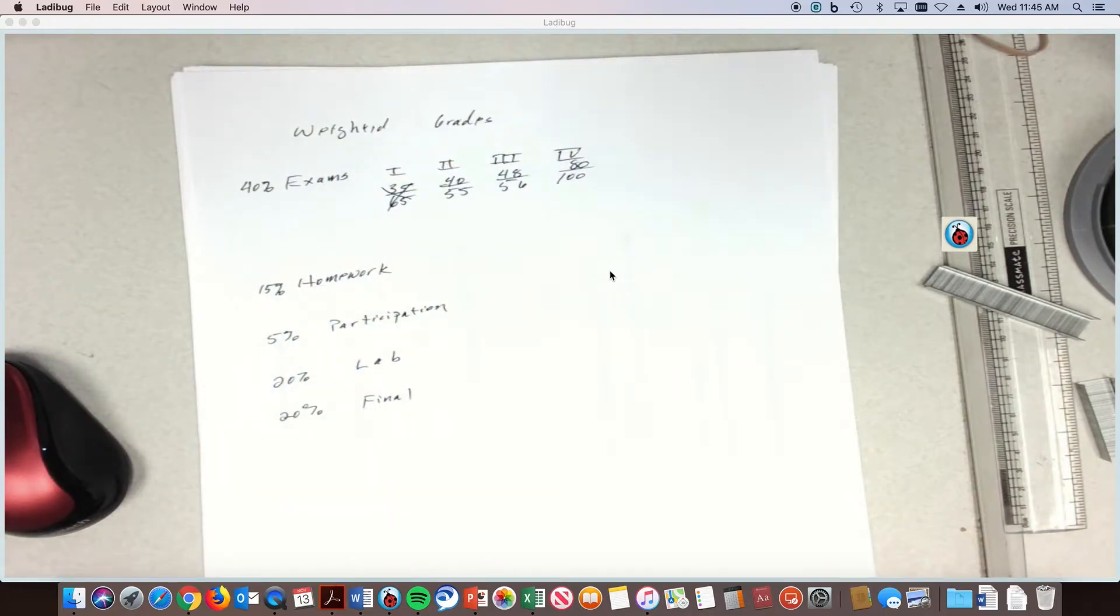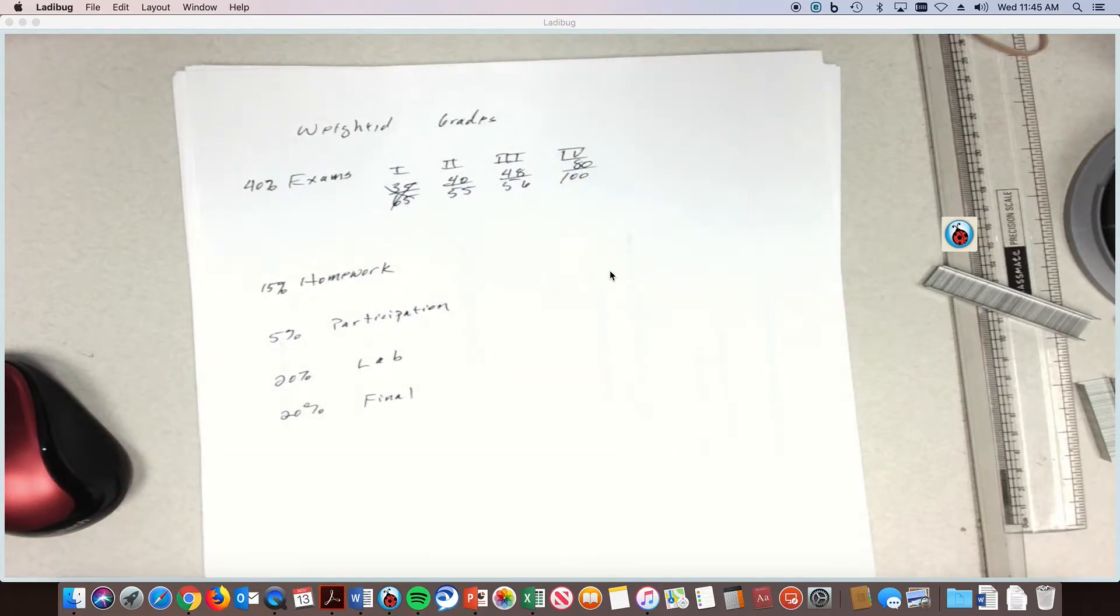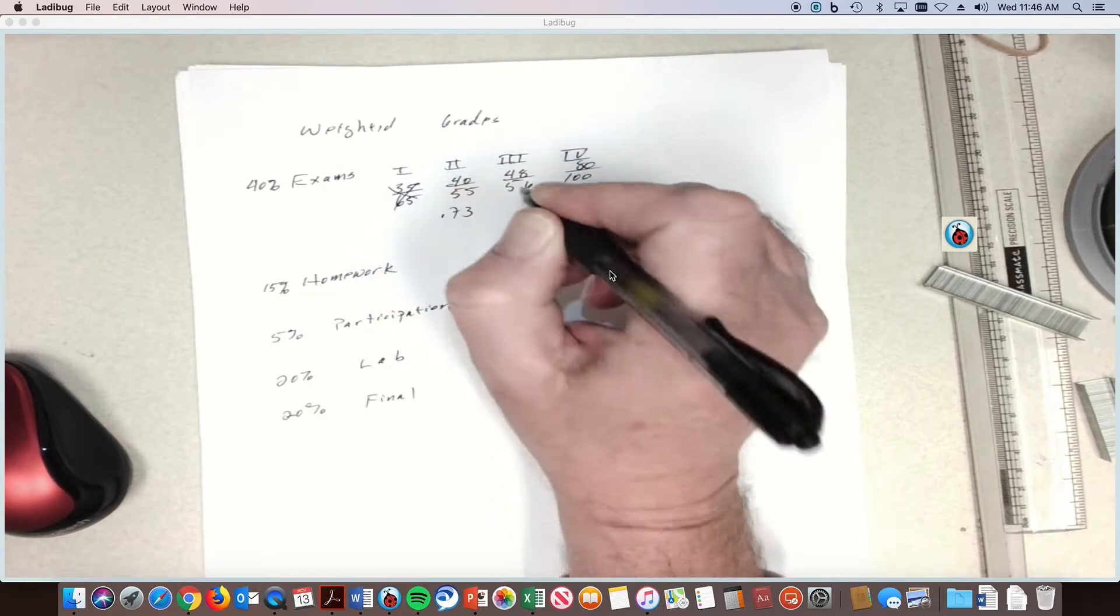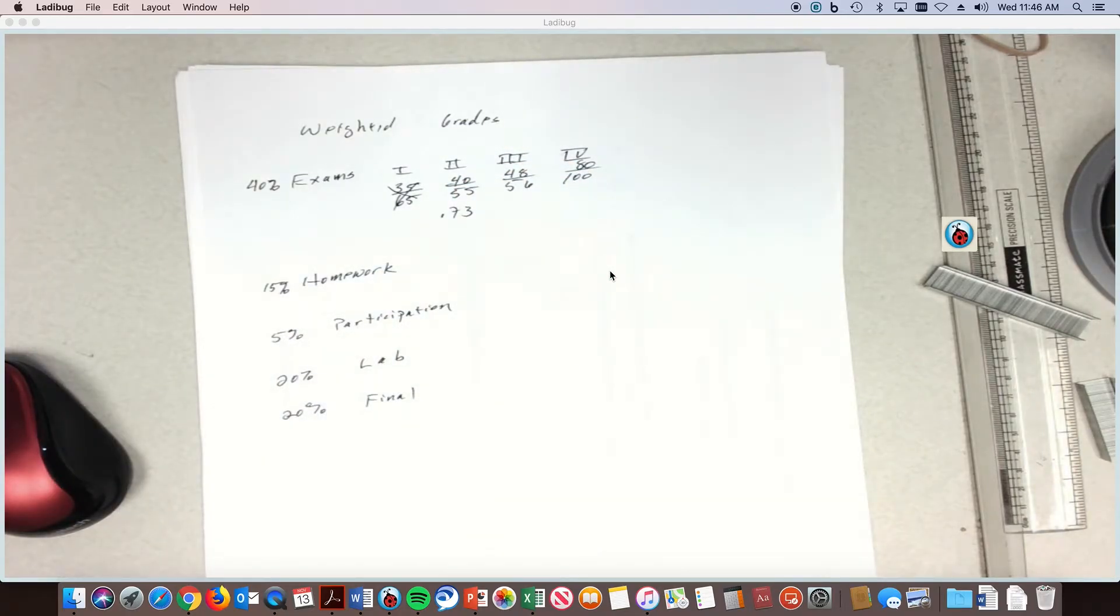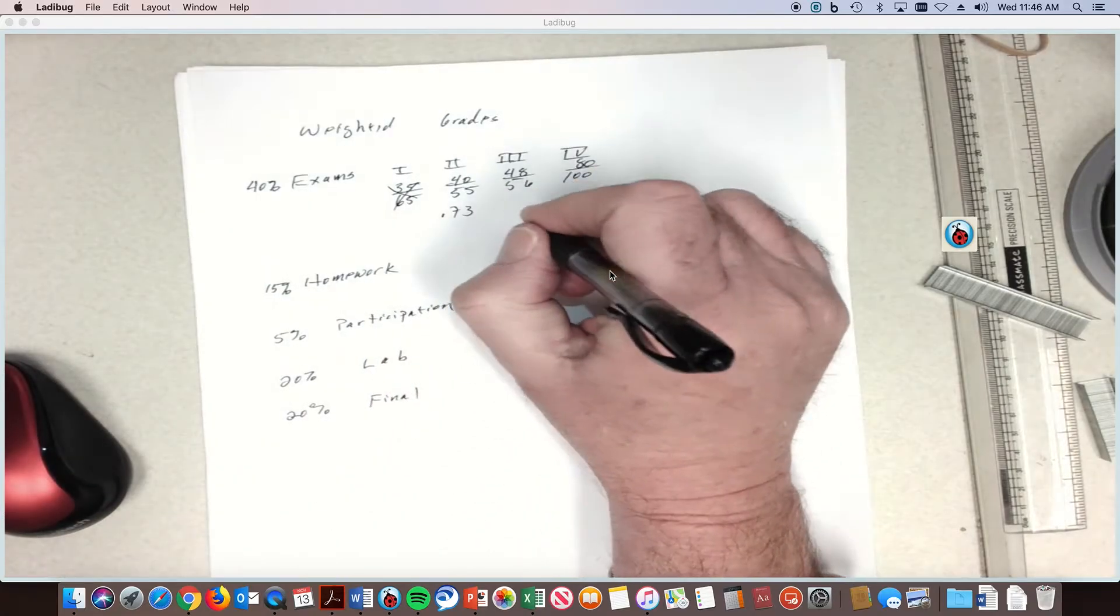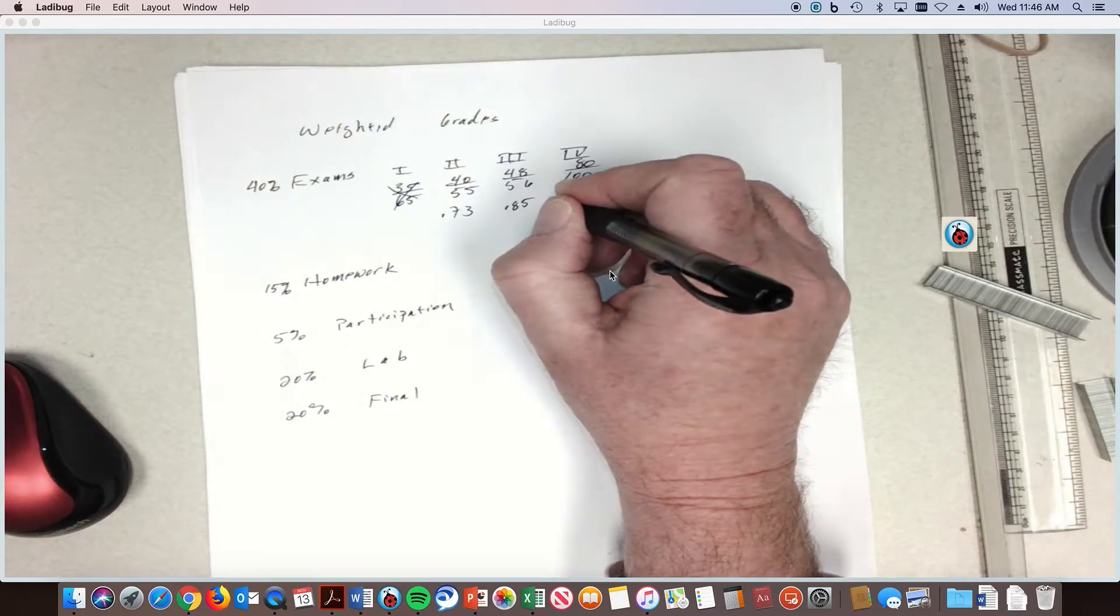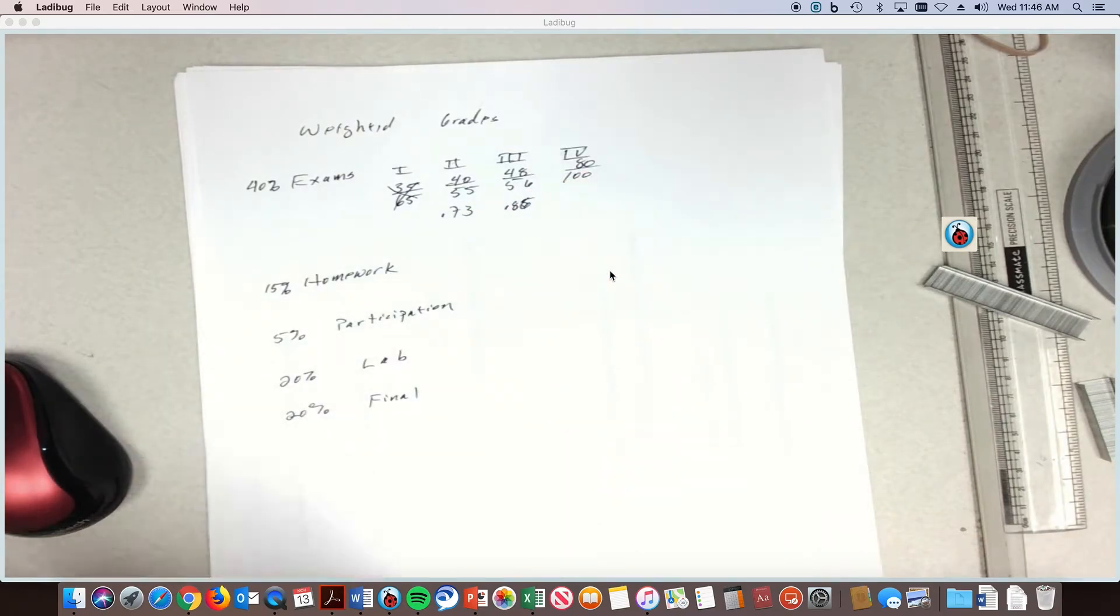Pretty much we can see that this is the lowest one so we'll drop that one. We'll find out what the percents are of each of those. Let me grab my calculator. So you find the percents of each one of these: 40 divided by 55 is 0.72 or 73 percent, 48 divided by 56 is 0.85, it's actually 0.86, and then 80 will be 80 percent.